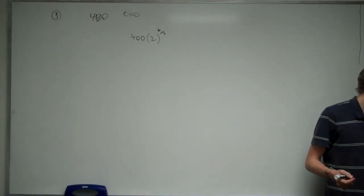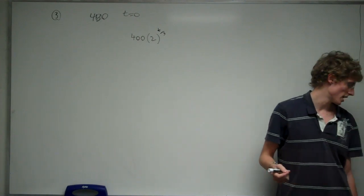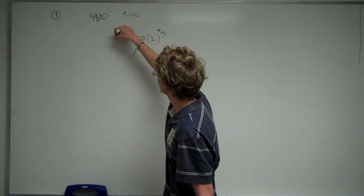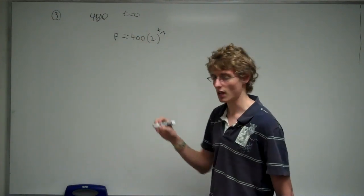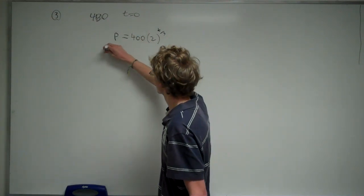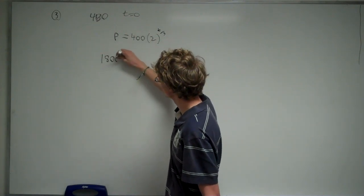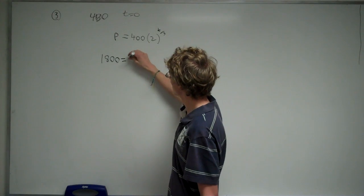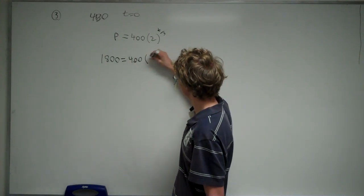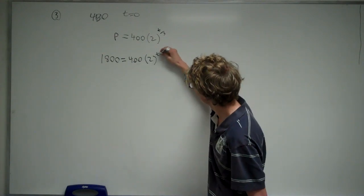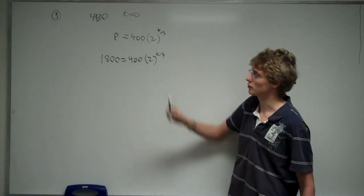And we want to know how many years it would take for the population to grow to 800. So this equals P, and we want to know how many years it takes for the population to reach 1800. So we just plug in 1800 for P, and then we want to solve for t.